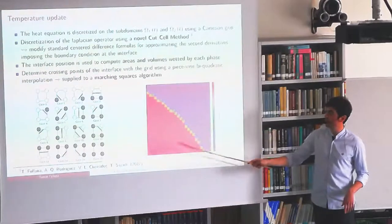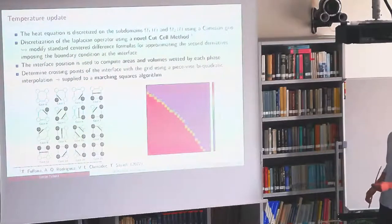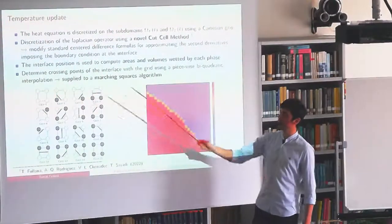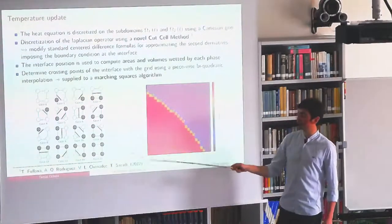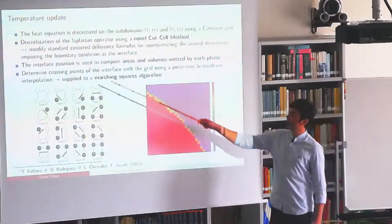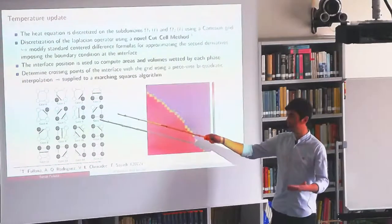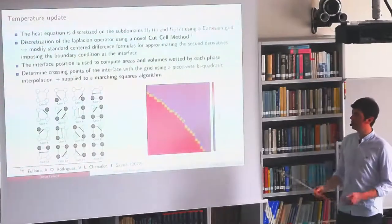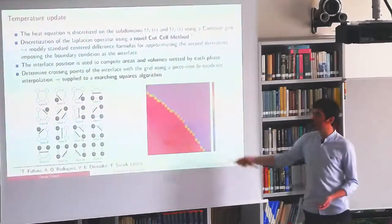We use a novel cut cell method developed by Tarane, Vincent Le Chenadec, Alejandro, and me, which modifies the standard centered finite difference formulas for approximating second-order derivatives. The interface position is used to compute areas and volumes weighted by each face. We apply a marching squares algorithm to distinguish 16 cases — from a fully liquid cell (case 0) to a fully solid cell (case 15) — with the intermediate cases being partial mixed cells. Values at corners are interpolated from the level set function to determine where the interface crosses the Cartesian grid and compute phase capacities and volume fractions.